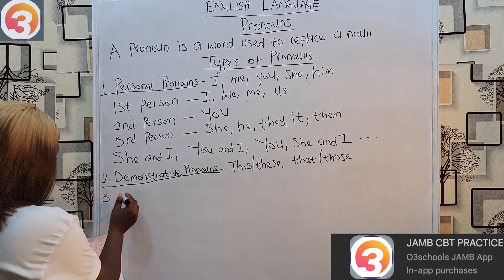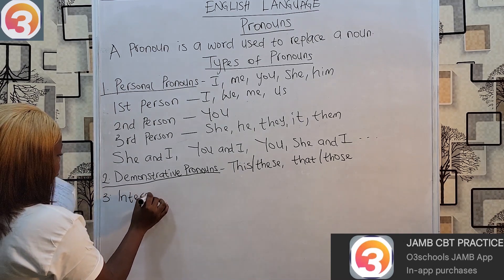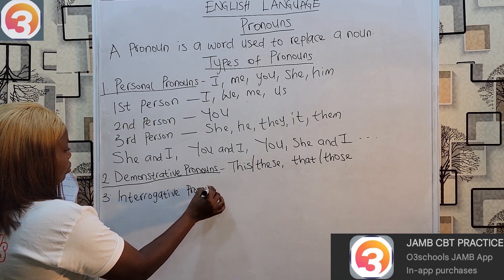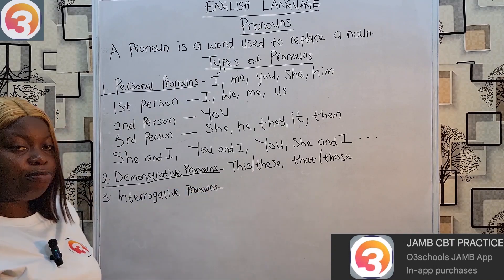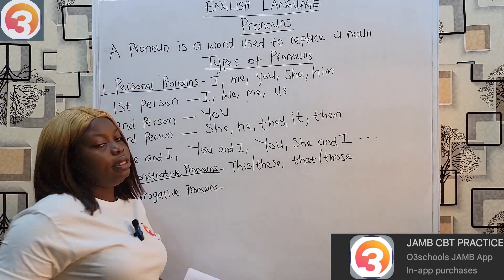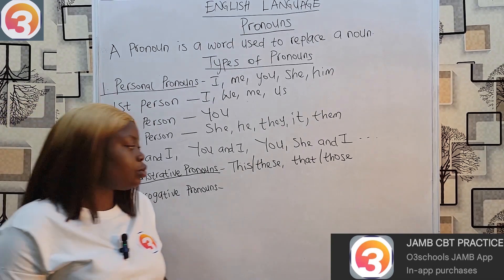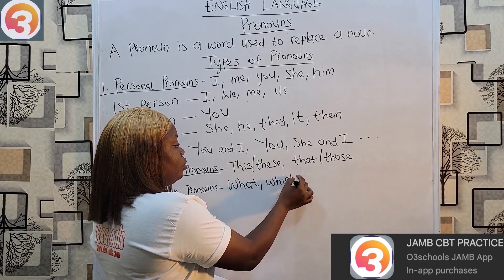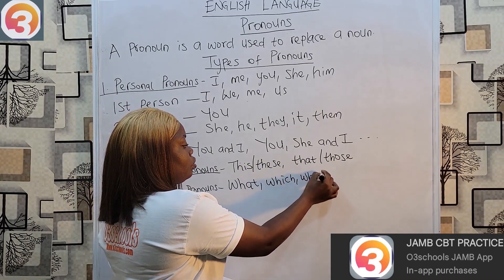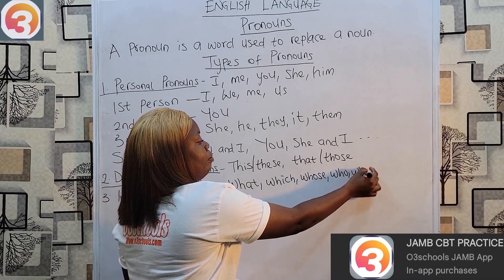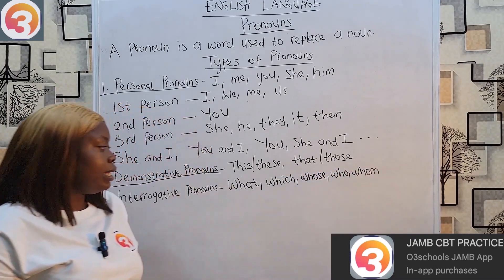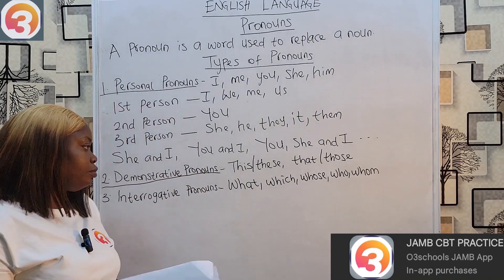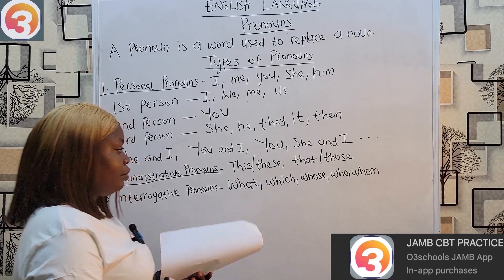Three: we have interrogative pronouns. From the word 'interrogative,' they are for asking questions. These pronouns are used to ask questions. Examples: who, which, whose, whom — all of these are interrogative pronouns. For example: 'Whose bag is this?' or 'To whom did you give the pen?'